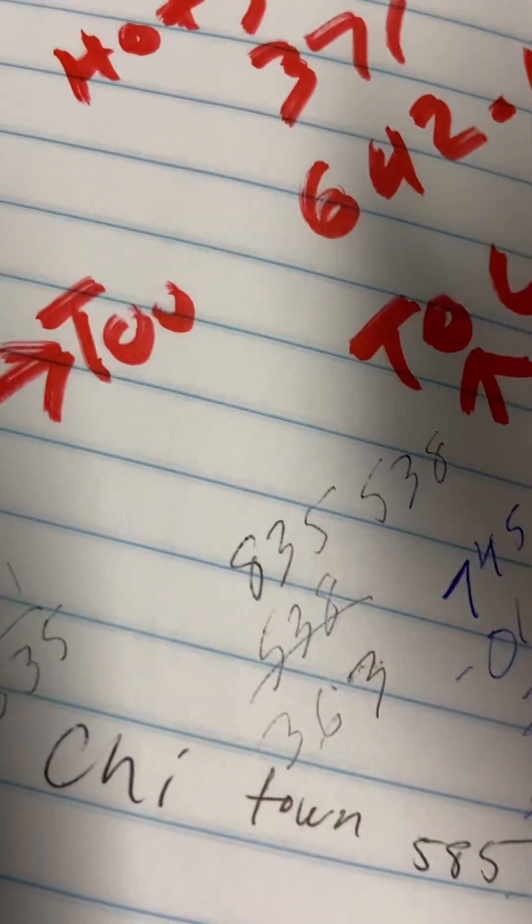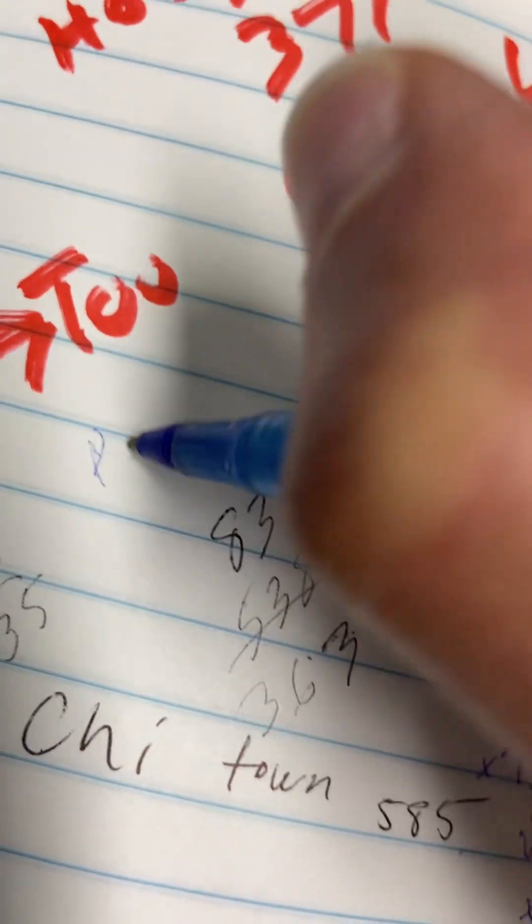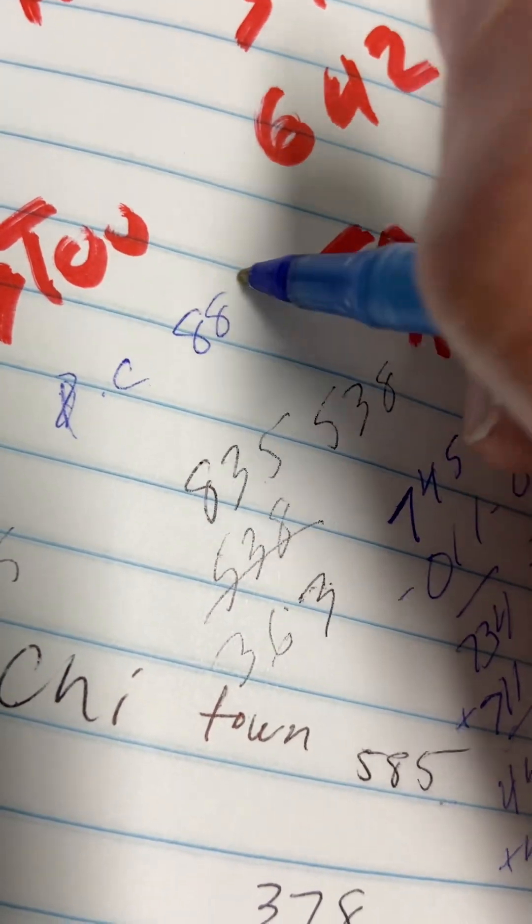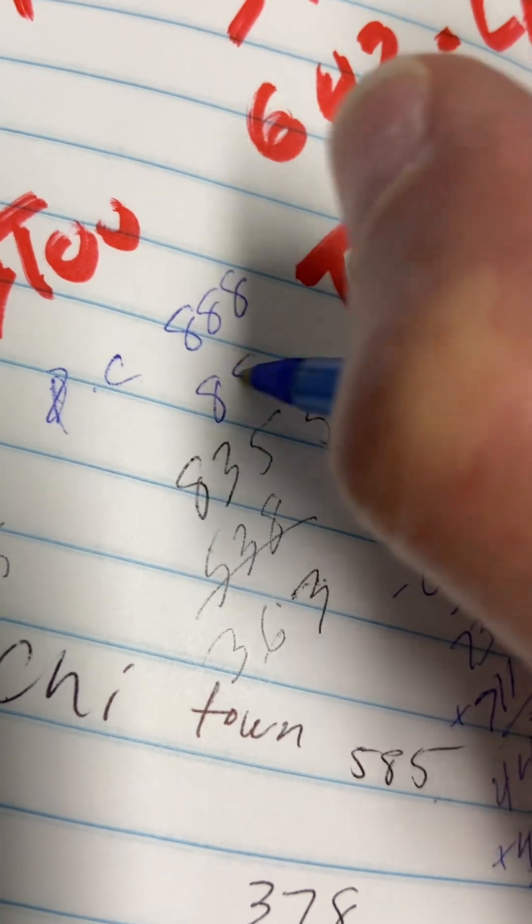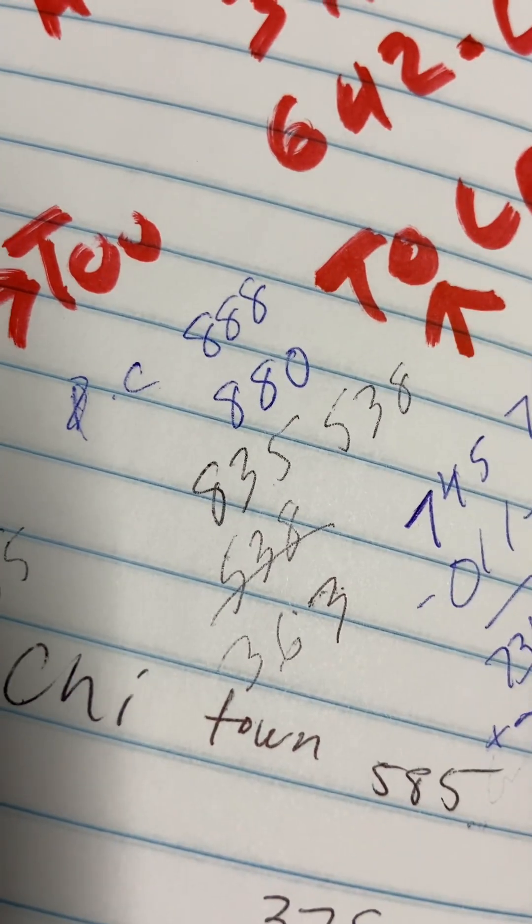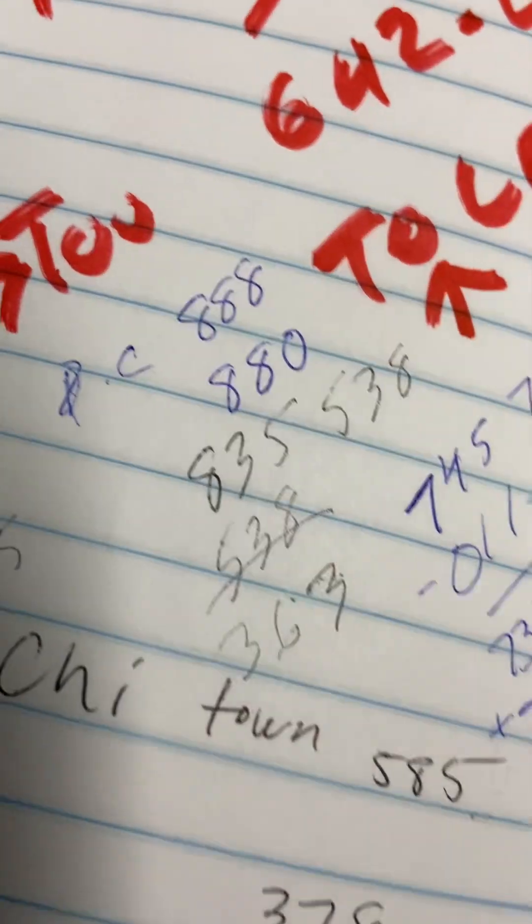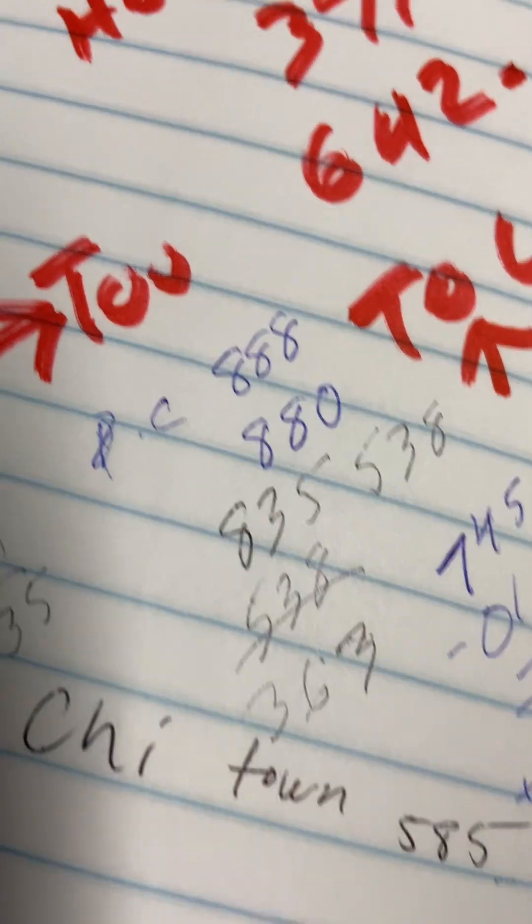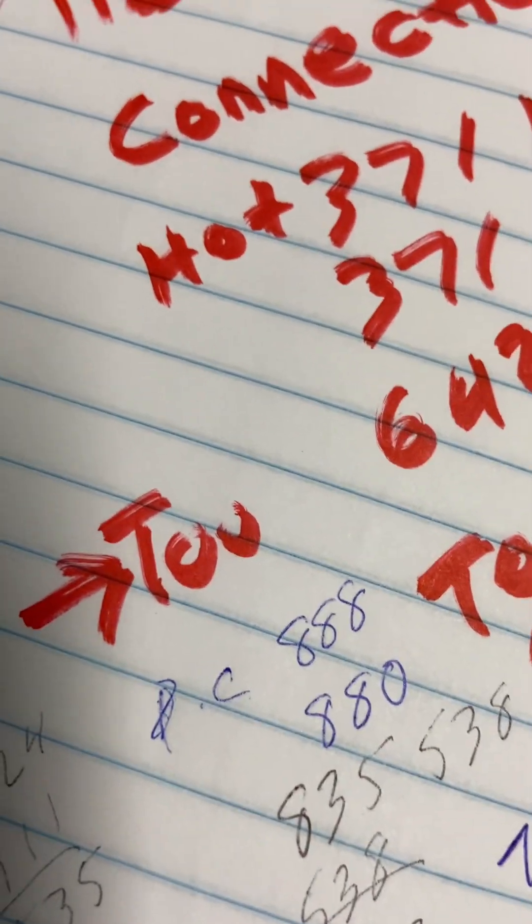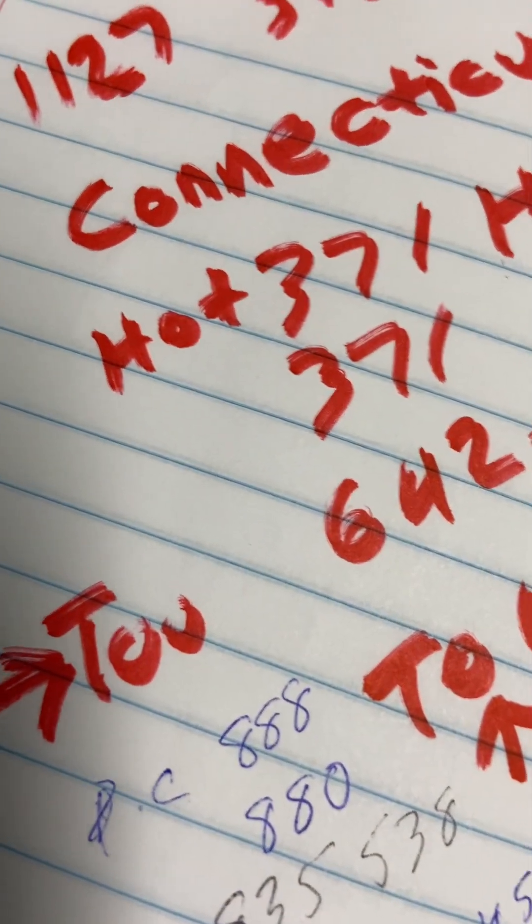I got in DC triple eights for the rest of the month. Alright, so in DC, if you just want to play a few numbers for the rest of the month, go ahead and play 880 and triple eights.